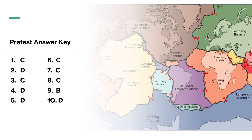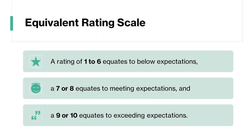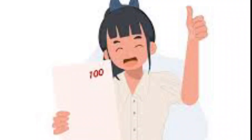Here are the equivalent performance rating scale of your score. A rating of 1 to 6 equates to below expectations. A 7 and 8 equate to meeting expectations, and a 9 and 10 equate to exceeding expectations. Do not worry if you got 6 below, because you are about to take the perfect score in just a few moments.